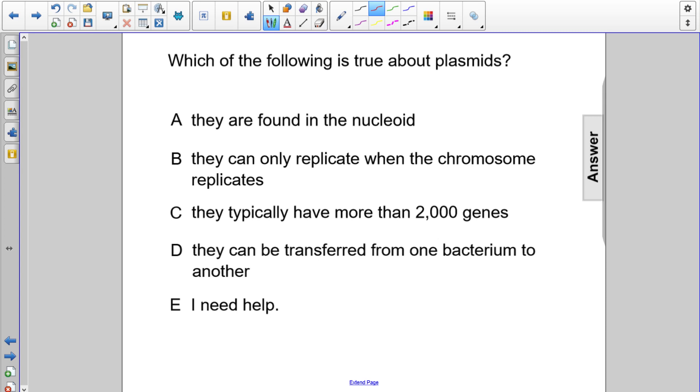Which of the following is true about plasmids? Choice A, they are found in the nucleoid. The nucleoid is where the main chromosomal of the bacterial cell's DNA is found. Plasmids are extra DNA, so they're not found in the nucleoid. Choice A is not the correct answer.